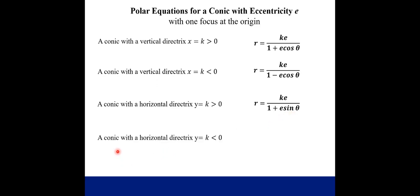And then you can guess if I take a horizontal directrix that's negative, it's going to change the sign right here. This plus sign becomes a minus sign. And so we can reference these four when we're looking to write a conic section equation in polar form. So let's try out an example.